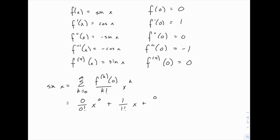Then the next term we'll have 0 over 2 factorial times x to the 2, and then plus negative 1, so minus 1 over 3 factorial x to the 3rd, plus 0 over 4 factorial x to the 4th, plus 1 over 5 factorial x to the 5th, and so on.